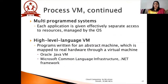There are essentially two aspects in line with process virtual machines. First, multi-programmed systems, wherein each application is given effectively separate access to resources managed by the operating system. Second, high-level language virtual machines, wherein programs are written for an abstract machine that is mapped to real hardware through a virtual machine — this is where the example of JVM comes into picture. Another example listed under high-level language virtual machines is Microsoft CLI, also known as the .NET framework.